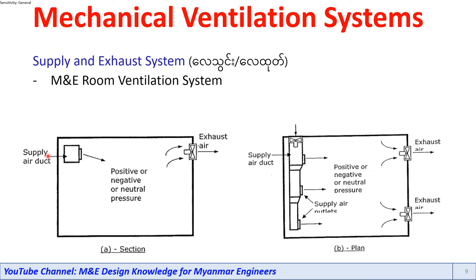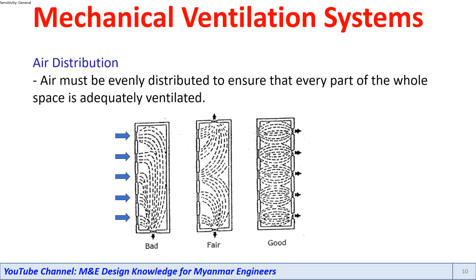So the supply is positive, and the supply is at neutral pressure — the trauma is a neutral pressure, so the supply is a neutral pressure. Air distribution or air must be evenly distributed to ensure that every part of the whole space is adequately ventilated.